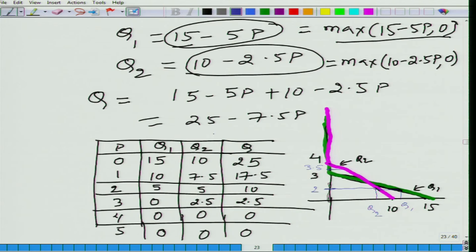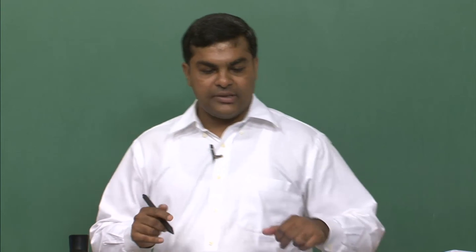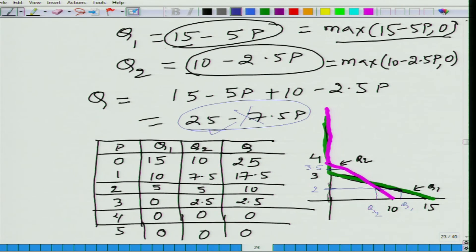We cannot simply say the market demand is 25 minus 7.5P throughout, because we are incorrectly treating demand functions as 15 minus 5P and 10 minus 2.5P. The correct demand functions are the maximum of (15 minus 5P, 0) and the maximum of (10 minus 2.5P, 0), and we add these two.